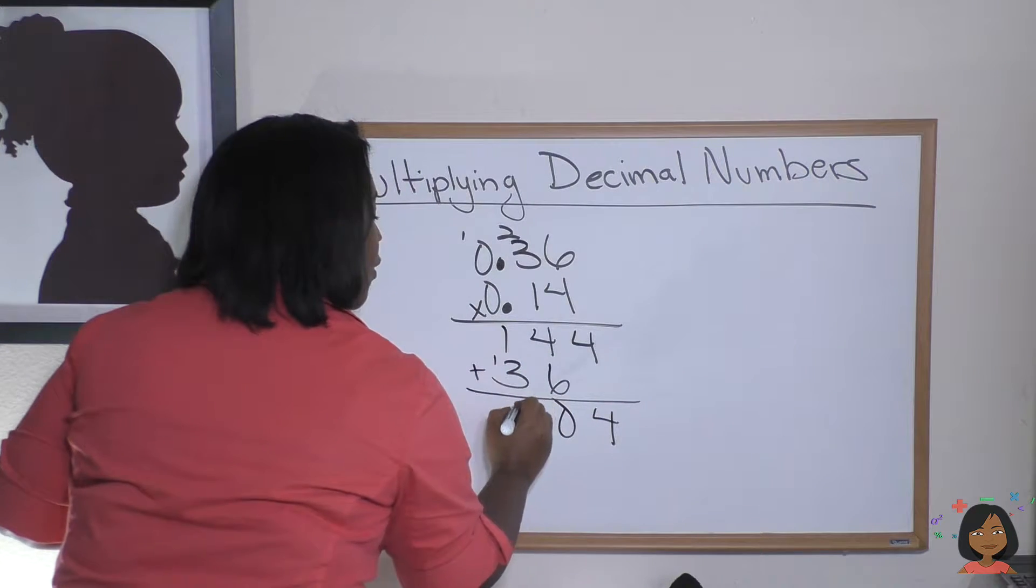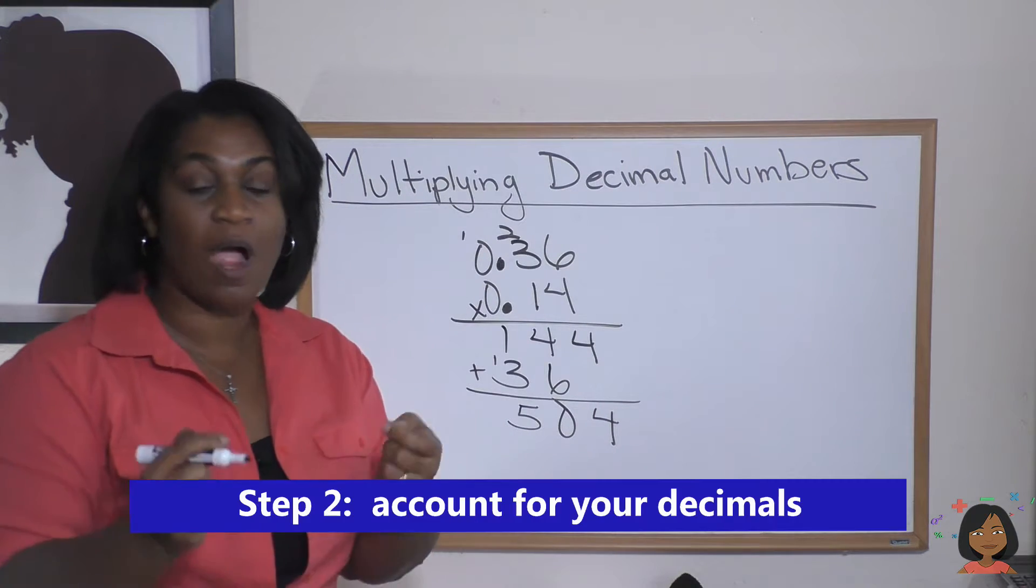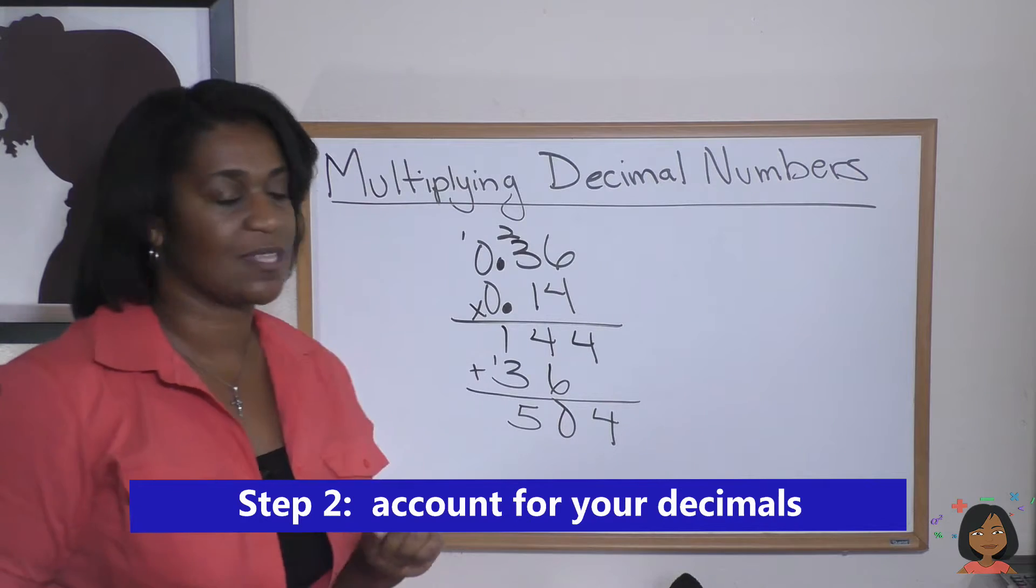And we're going to add everything together. Four, zero, five hundred and four. But are we done? No. We haven't accounted for our decimals yet.